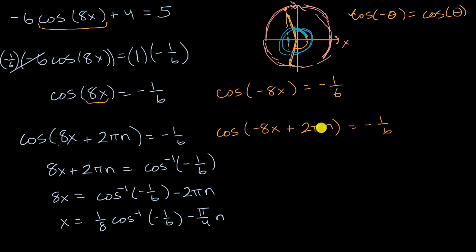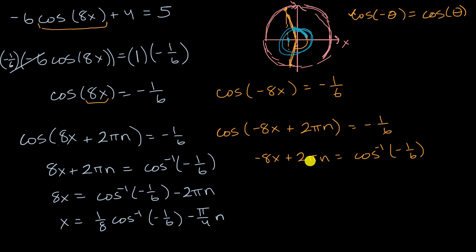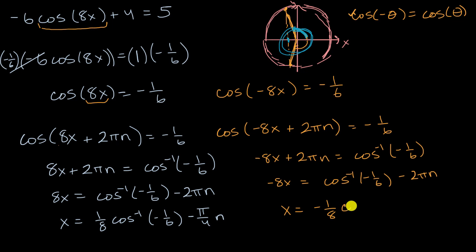Now doing the same in the second scenario: the inverse cosine gives negative eight X plus two pi N equals the inverse cosine of negative one sixth. Subtracting two pi N: negative eight X equals the inverse cosine of negative one sixth minus two pi N. Multiplying both sides by negative one eighth, X equals negative one eighth times the inverse cosine of negative one sixth, plus pi over four times N. This is the complete solution set from the combination of both expressions.